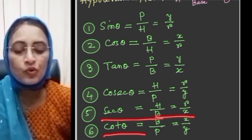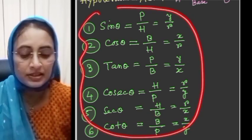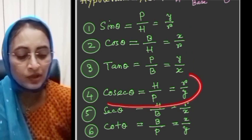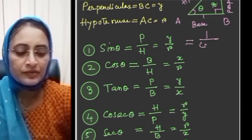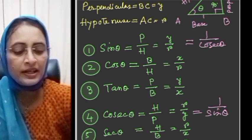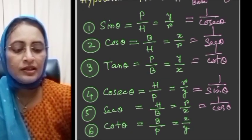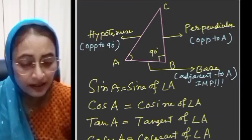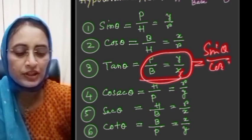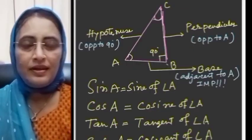These ratios are interconnected with each other. Sine theta equals y by r and cosec theta equals r by y, so sine theta equals 1 by cosec theta. Cos theta equals x by r and sec theta equals r by x, so cos theta equals 1 by sec theta. Tan theta equals y by x and cot theta equals x by y, so tan theta equals 1 by cot theta. Also, tan theta equals sin theta by cos theta.